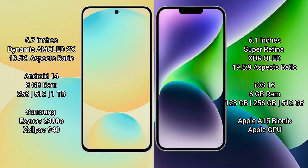Samsung Galaxy S24 FE comes with 8GB RAM and 128GB, 256GB, or 512GB internal storage. Samsung uses the Exynos 2400E processor. iPhone 14 comes with 6GB RAM and 128GB, 256GB, or 512GB internal storage.